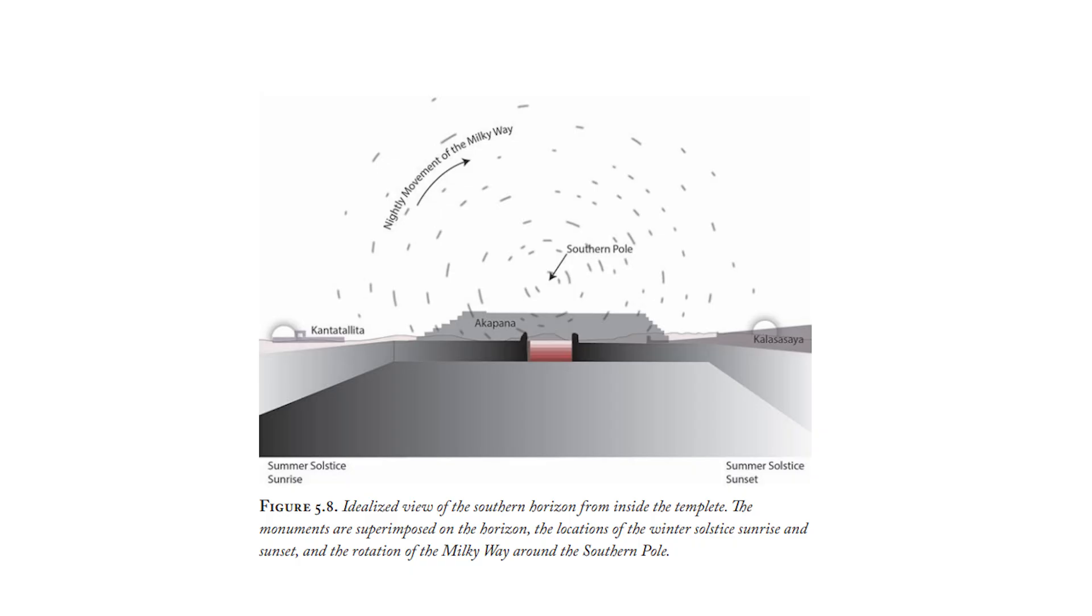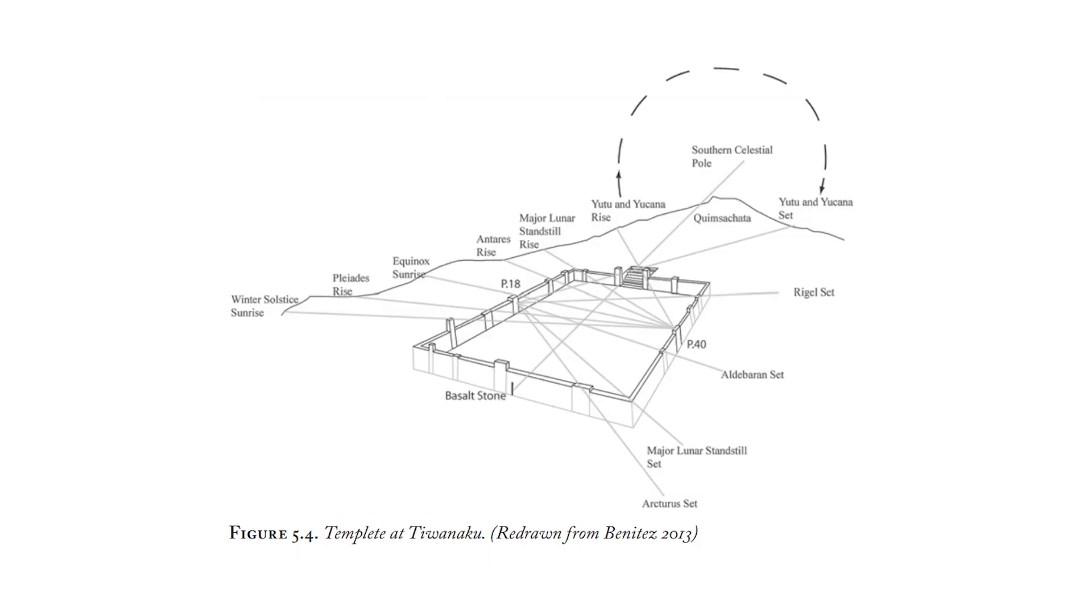There is general agreement that the Kalasasaya, like the sunken temple before it, functioned as an observatory. For a viewer standing on the central platform, the outer two pillars would have visually demarcated the setting sun on the two solar solstices. The north pillar indicated the beginning of winter in the southern hemisphere on June 21st, and the south pillar the beginning of summer on September 21st. Every second pillar between them marked a 30-day countdown of setting suns. The central pillar marked the equinoxes.